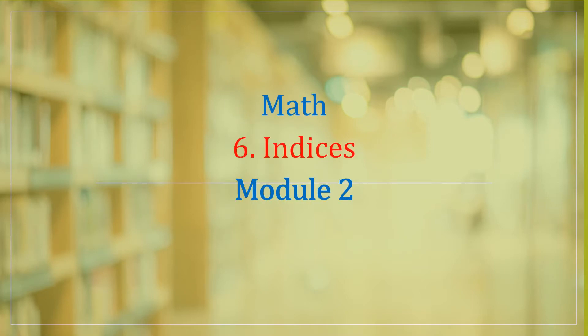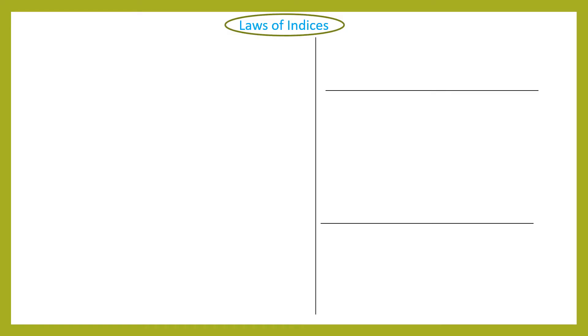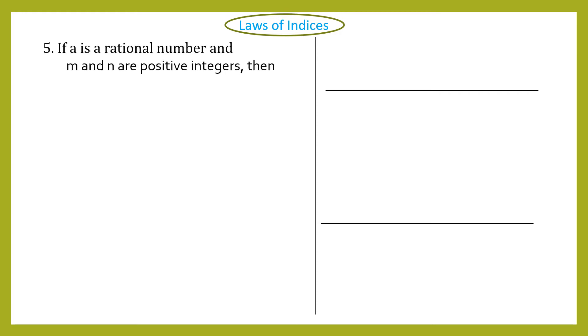Good morning students, let's continue with chapter number six, Indices, Module Two. Dear children, we have already learned four laws of indices in the last module. In this module we'll continue to learn four more laws. Let's see Law Number Five: if a is a rational number and m and n are positive integers, then...